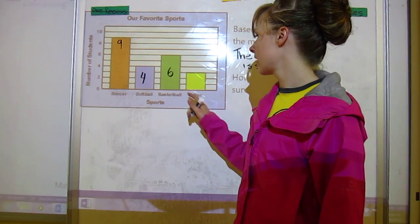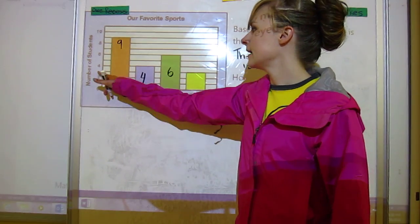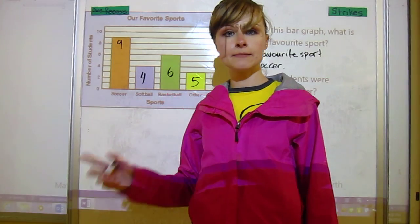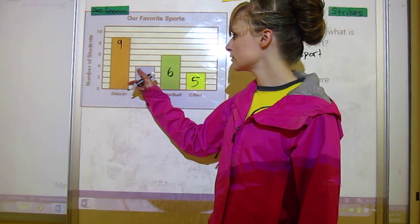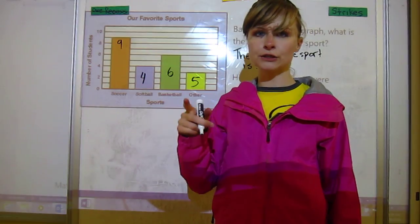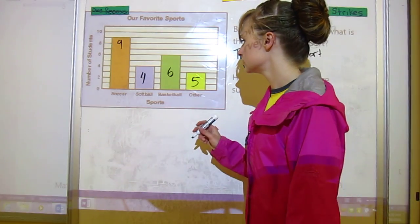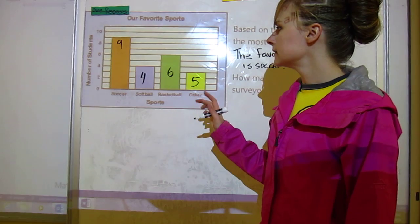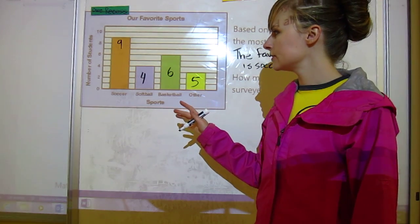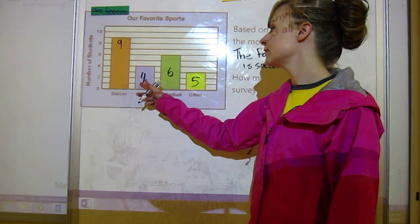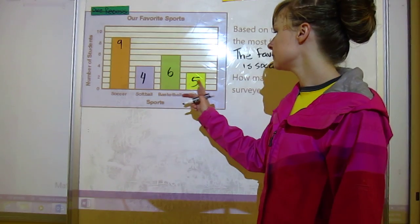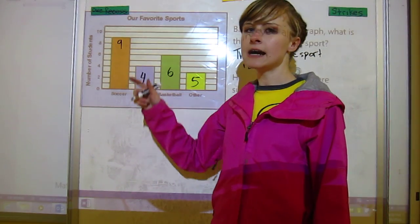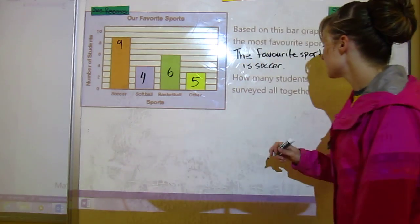Basketball is at six and other is at five. Notice how I drag my finger across to make sure that I'm at the right line. That's what those lines are for, so that you can drag your finger across, make sure that you're on the right spot. So now we just need to add those all up. So we've got four plus six is ten, plus five is fifteen, plus nine is twenty-four.